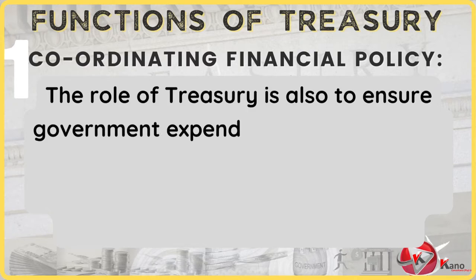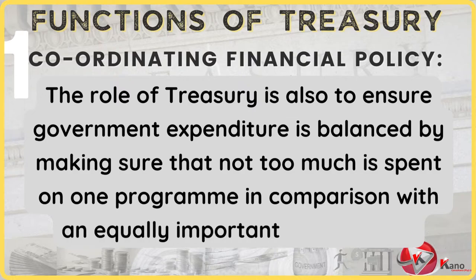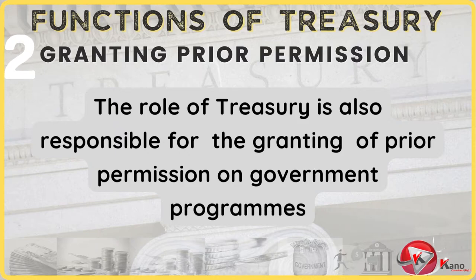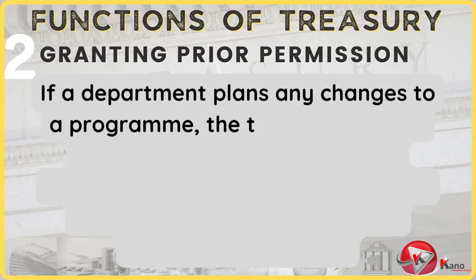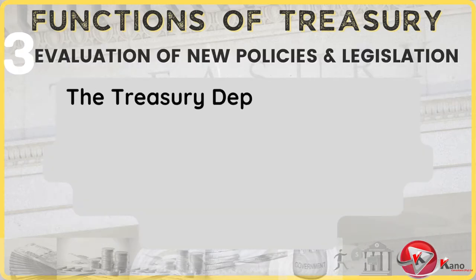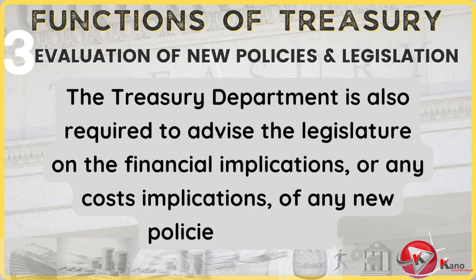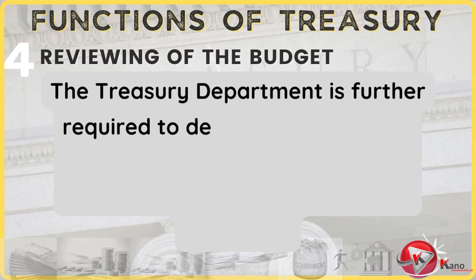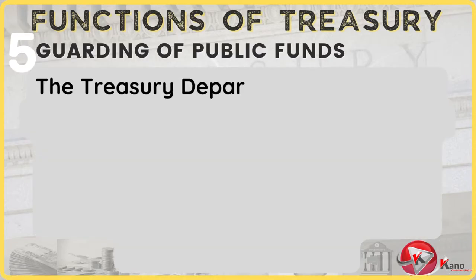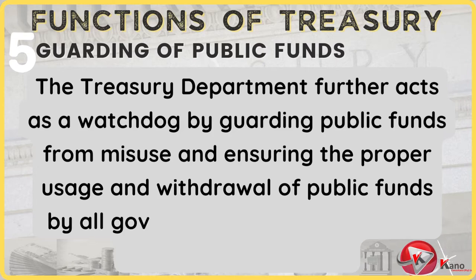The role of Treasury is also to ensure that government expenditure is balanced, by making sure that not too much is spent on one program in comparison with an equally important program. The Treasury Department is also responsible for the granting of prior permission on government programs. If a department plans any changes to a program, the Treasury must be informed so that it can study and evaluate the financial implications. The Treasury Department is also required to advise the legislature on the financial implications, or on any cost implications, of any new policies and laws.